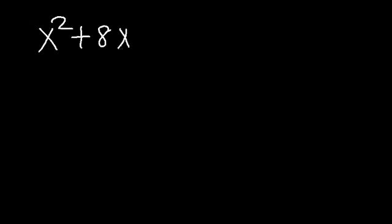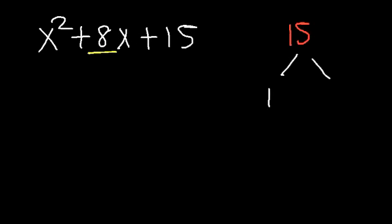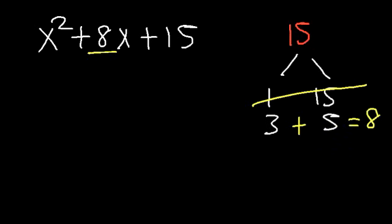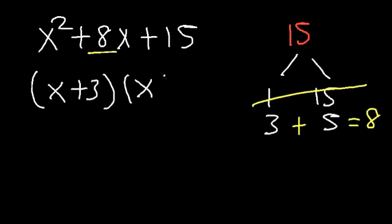Let's go over another example: x squared plus 8x plus 15. What two numbers multiply to 15 but add to the middle number 8? We have 1 and 15, and 3 and 5. Now 1 plus 15 is 16, so that's not going to work. But 3 plus 5 does add to 8, so the answer is x plus 3 times x plus 5.